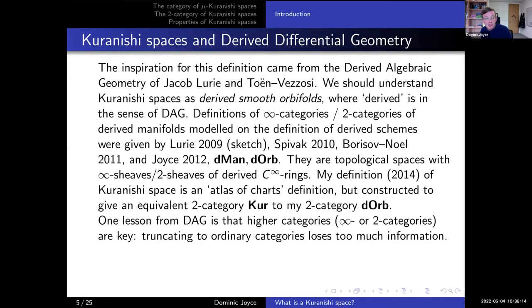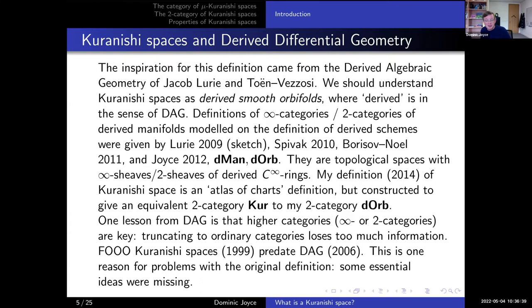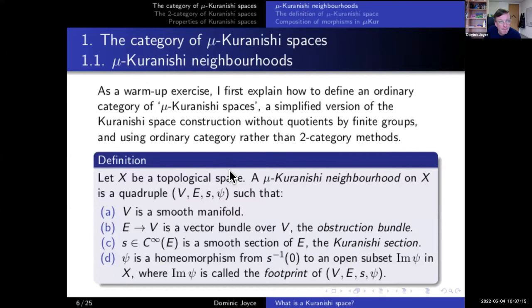One lesson from derived algebraic geometry is that you really have to work in a higher category — either an infinity category or a two-category. Almost all of derived algebraic geometry happens in the world of infinity categories, and truncating to ordinary categories loses too much information. Professor Fukaya's notion of Kuranishi space actually predates derived algebraic geometry, and one reason for the problems with the original definition is that some essential ideas from derived algebraic geometry were missing, especially the higher categorical theory. You could argue that Professor Fukaya was one of the originators of derived algebraic geometry.